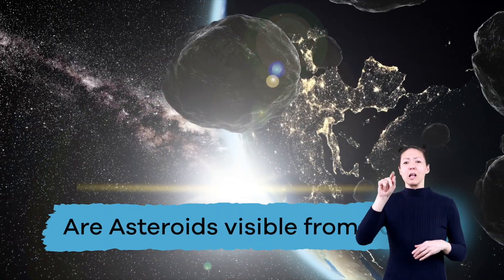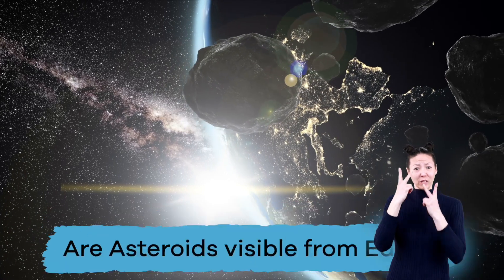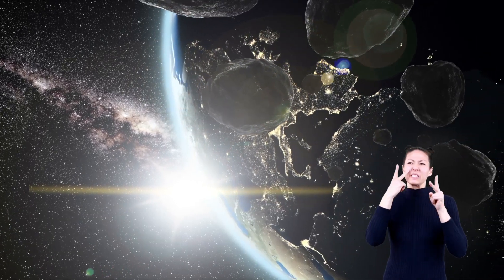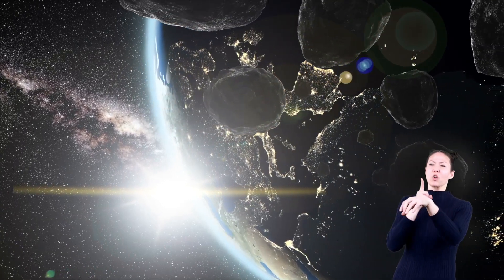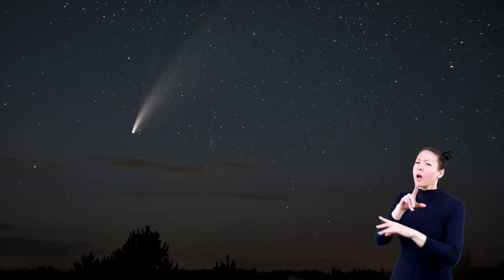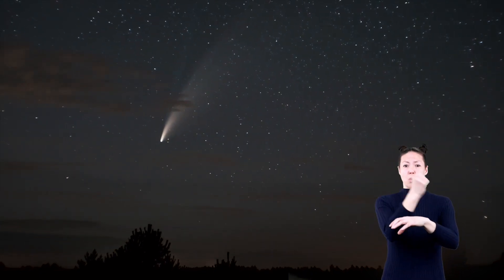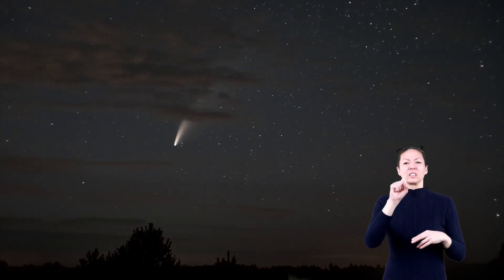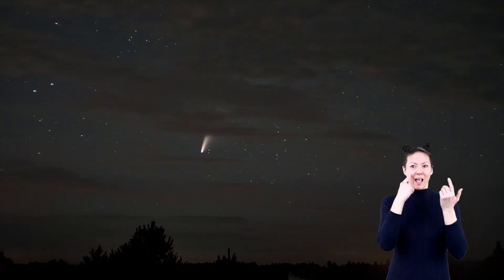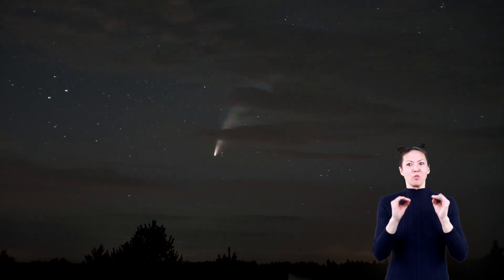Are asteroids visible from Earth? Most asteroids cannot be seen from Earth without using a telescope. However, one asteroid named Vesta can occasionally be seen from Earth with the naked eye.